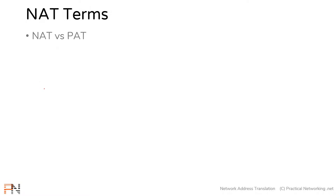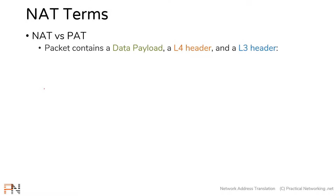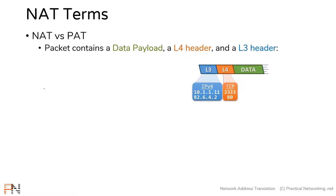We'll start with the words NAT versus PAT. So every packet, as it crosses the internet, includes a few different headers. It's got the data payload, it's got a layer 4 header, and a layer 3 header. The layer 3 header has things like the source IP address and the destination IP address. And the layer 4 header would include the TCP or UDP header and the source port and destination port.